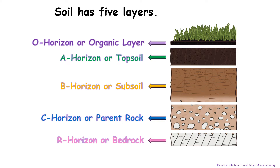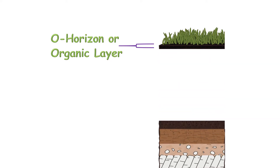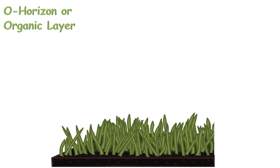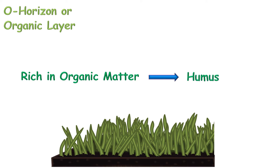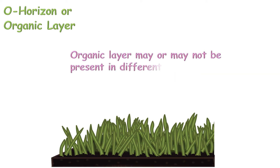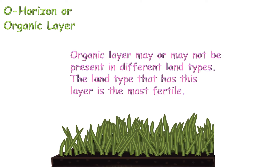O horizon, or organic layer, is the thin topmost layer of dead plant and animal material like dead leaves, twigs, and insects. This dead material makes O horizon rich in organic matter, also known as humus, which is helpful for the growth of plants. The organic layer may or may not be present in different land types; the land type that has this layer is the most fertile.